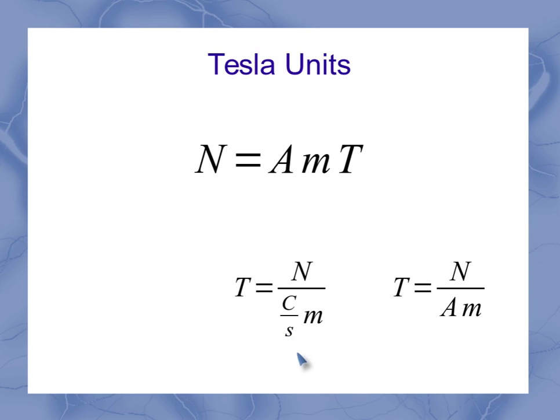And with just a little bit of rearrangement, I see I could also relate that to this form for Tesla. And if you think back, this is the form for Tesla that we had originally derived when we were looking at the magnetic force on a moving charge, where we had the charge and the velocity. So all three units here for Tesla are equivalent to each other.